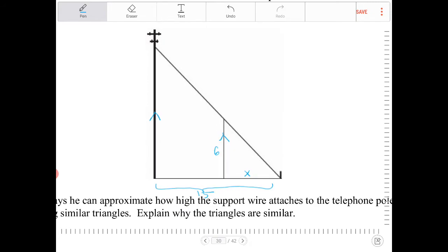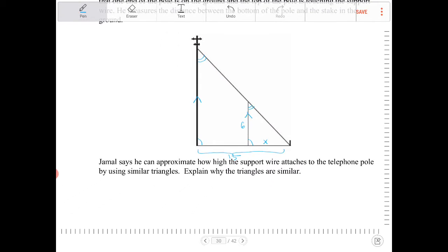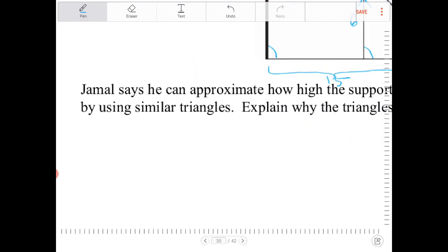So therefore, these angles over here that are corresponding will have to be congruent. These angles will also have to be congruent. So therefore, we have a small triangle that's going to be similar to the big triangle. So let's write those observations down.